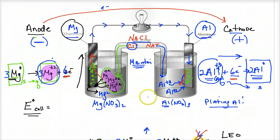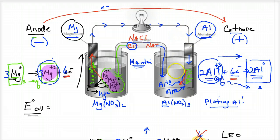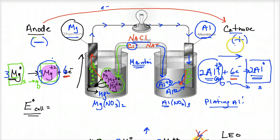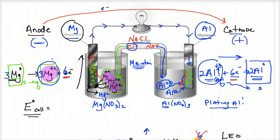Those are all the components of questions they can ask about this setup: who got oxidized (magnesium), who got reduced (aluminum³⁺ ions — not the aluminum electrode itself), the direction of electron flow (always anode to cathode), the charge of the anode (negative — where electrons come out), and the charge of the cathode (positive — where electrons are accepted). That covers all the things you'll see in a setup like this.